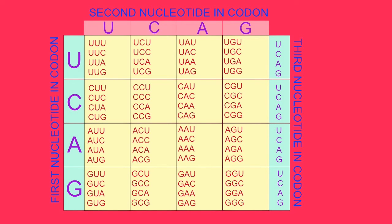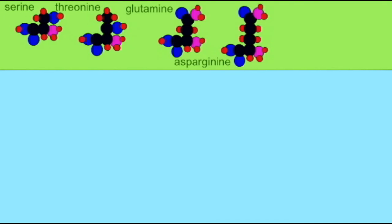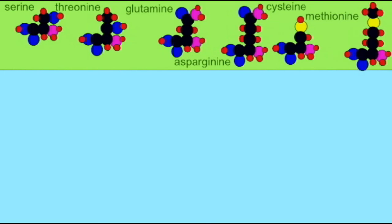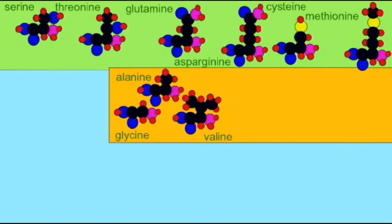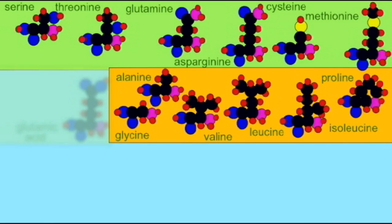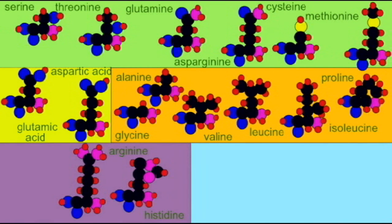Thus, the DNA code needs to be a triplet code. Only when there is a triplet code can there be sufficient amino acids encoded by the triplet DNA codons. With three nucleotides per codon, there is a maximum possible number of 64.